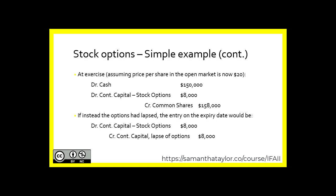Now, if instead of the stock price going up to $20 and the options being exercised, the options had lapsed at the expiration date, the journal entry would be to debit the contributed capital for stock options for $8,000 and replace it in the same contributed capital bucket with a contributed capital — lapse of options. This is a presentation entry to communicate that these options are no longer exercisable, but the money is still in the company. The $8,000 paid for these stock options hasn't gone anywhere, so we leave it there.